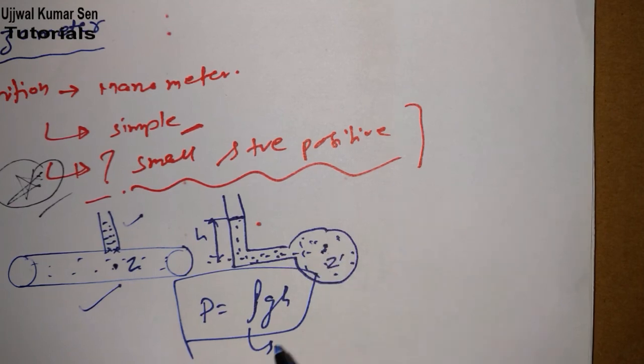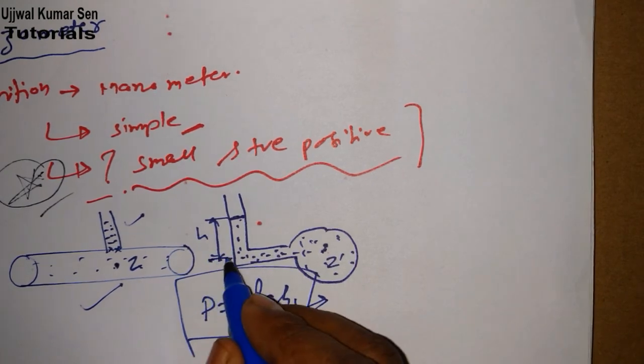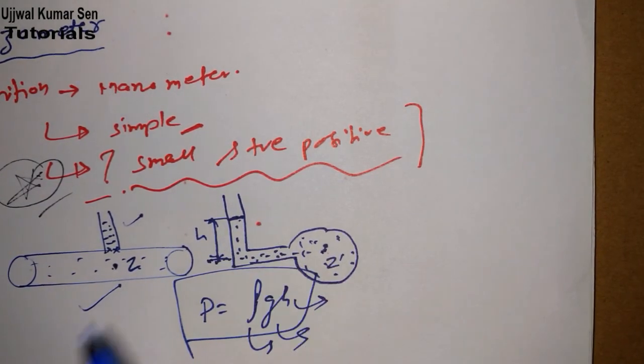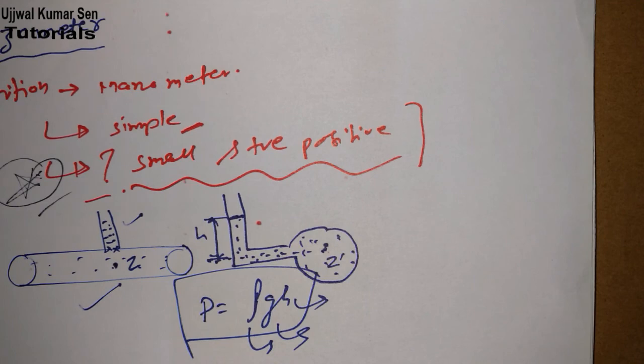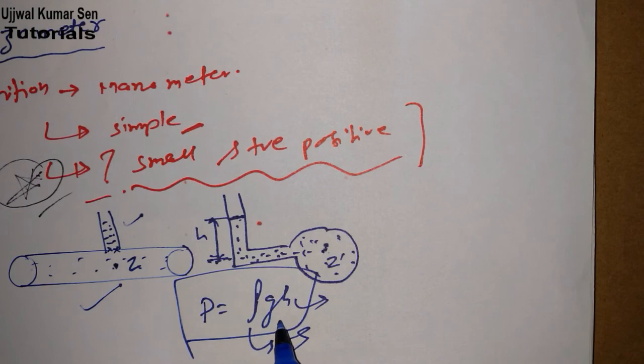Here what is ρ? Density of the liquid which we are having inside the pipe. And h is height, g is acceleration due to gravity, and h is the rise of the liquid in this pipe. So this is all about piezometer.